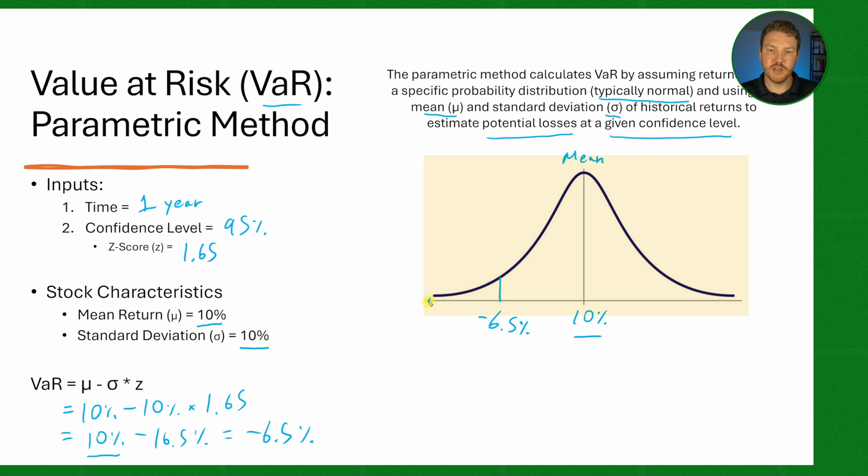So that means that in this part of the tail, this basically represents 5% of the worst possible returns. Now if we go on the right side of that barrier here, this would be the 95 percentile better outcomes.